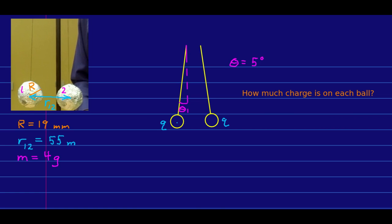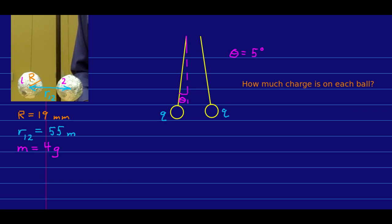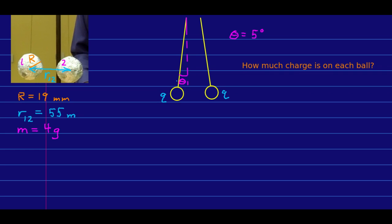If the balls are hanging stationary, this is a nice static situation, and the equation of motion will work. The vector sum of forces on each ball will be zero. Let's draw the free body diagram of one ball. I'm going to work with ball one, and then write the equation of motion. There is certainly a gravitational force acting on the ball, and there is a contact force being exerted by the string at a five-degree angle from vertical. And then there is an electrical force that ball two is exerting on ball one. The acceleration is zero.